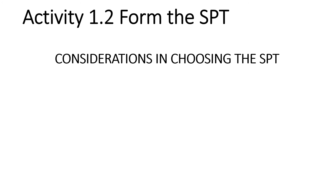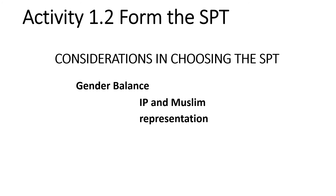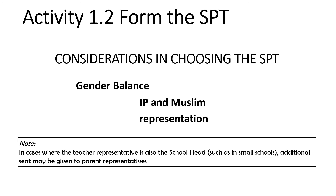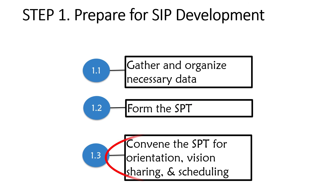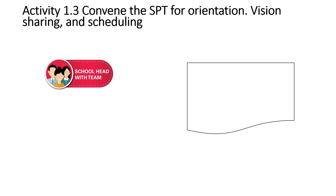Considerations in choosing the SPT include gender balance and IP and Muslim representation. In cases where the teacher representative is also the school head — such as in small schools — an additional seat may be given to parent representatives. List the members of the SPT with their representations. Moving to step 1.3: convene the SPT for orientation, vision sharing, and scheduling.